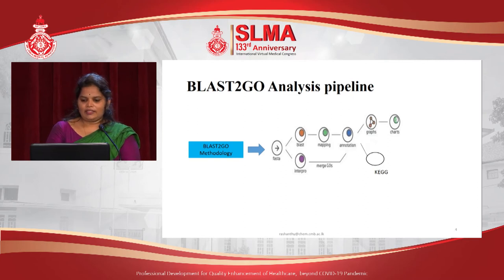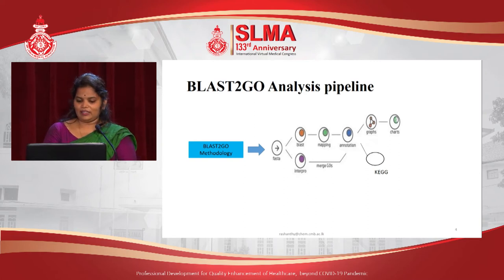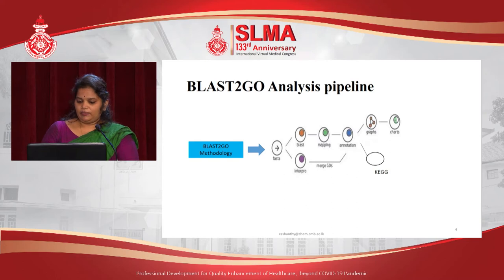In the methodology, for the BLAST analysis pipeline, we first had to load the FASTA sequence into the program. The FASTA sequence contained 2,075 contigs, which were blasted against the NCBI non-redundant database. In parallel, we had to perform an InterProScan. From the BLAST results, we carried out mapping, and from the mapping we carried out annotation. Annotation was also done by merging InterProScan results with Gene Ontology. From the annotation, we obtained the metabolic pathway in KEGG.